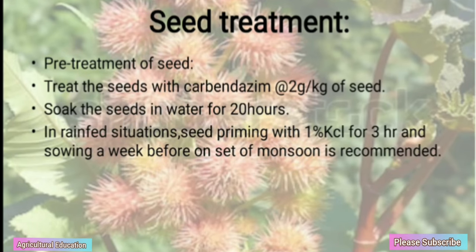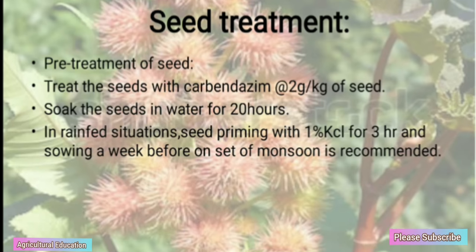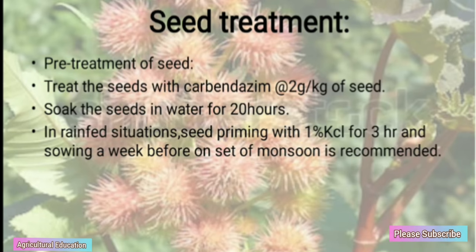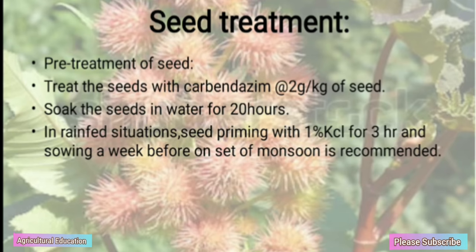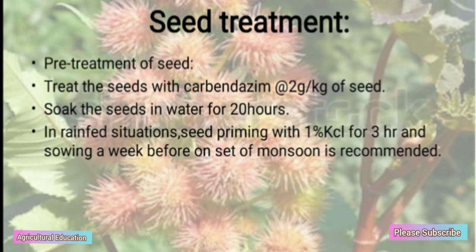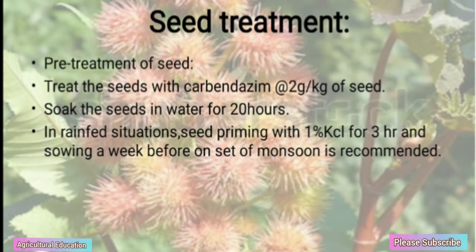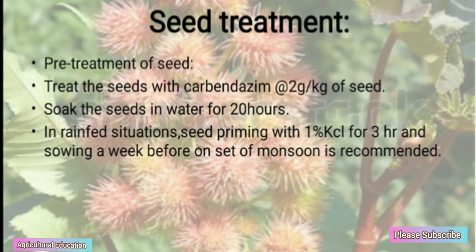Seed Treatment: Pre-seed treatment — treat the seeds with Carbendazim at the rate of 2 grams per kg of seeds. Soak the seeds in water for 20 hours. In rain-fed situations, seed priming with 1% KCl for 3 hours and sowing a week before onset of monsoon is recommended.